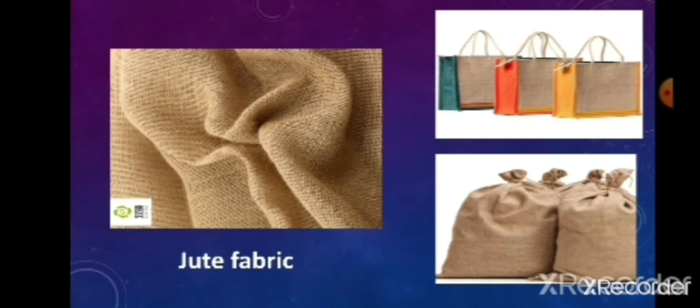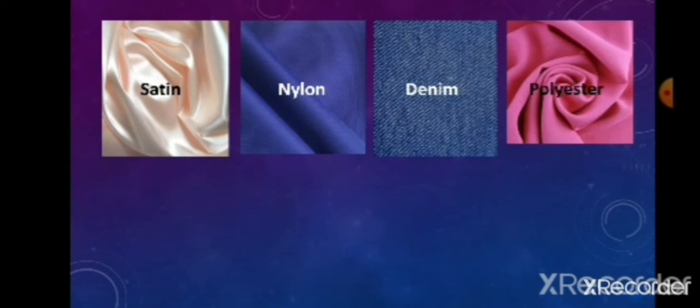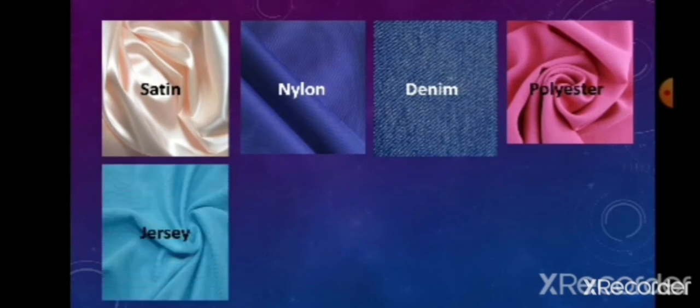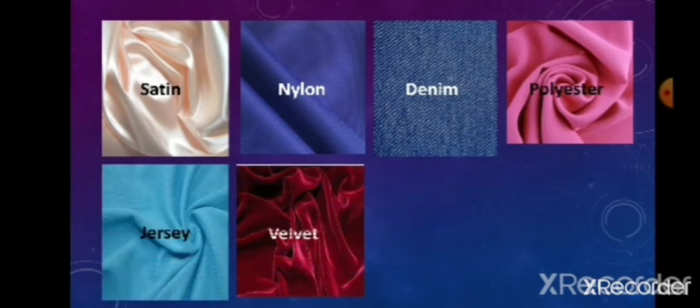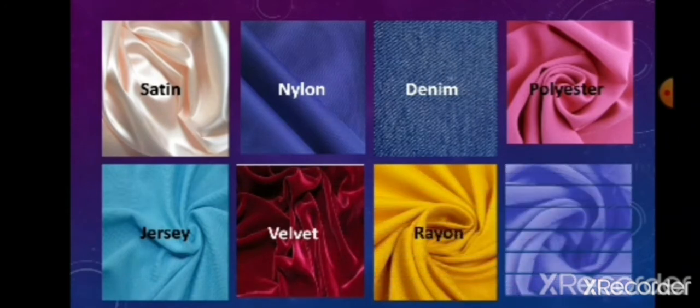Other types of fabric include satin, nylon, denim, polyester, jersey, velvet, rayon, and georgette. These are some of the types of fabric from which clothes are made.